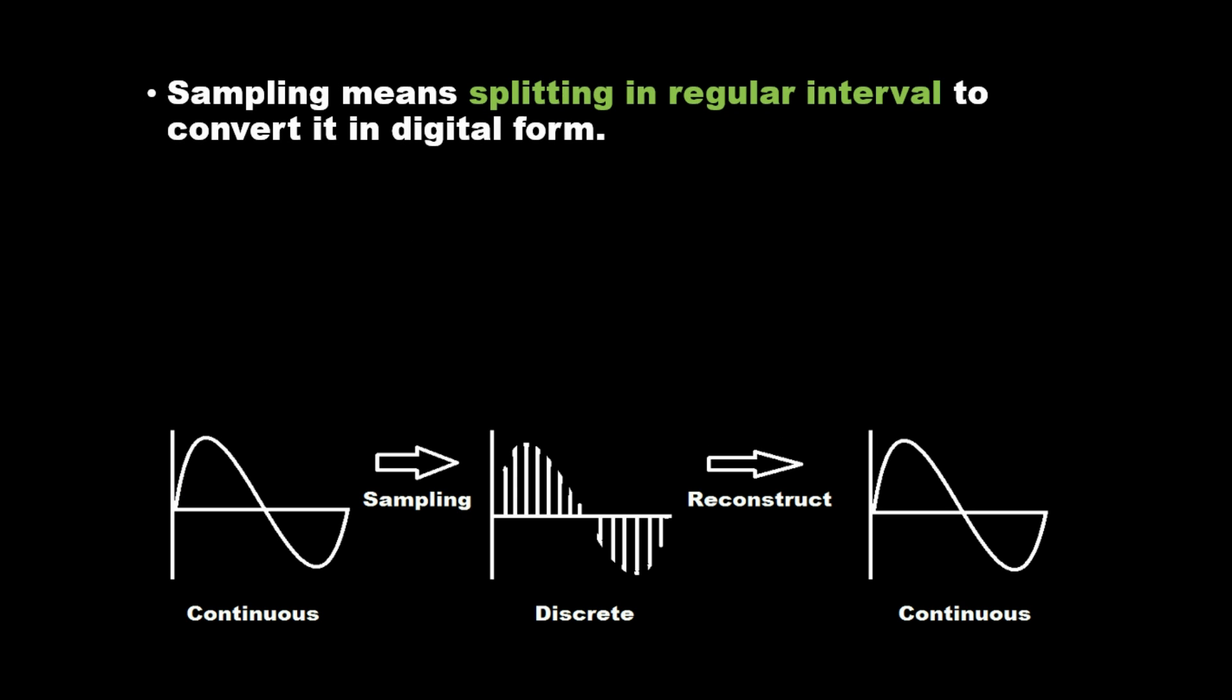Sampling means splitting in regular intervals to convert it to digital form. Sampling converts continuous signal to discrete signal.